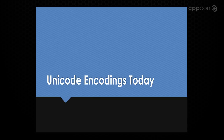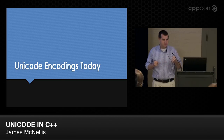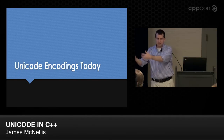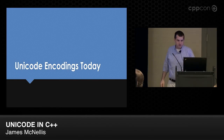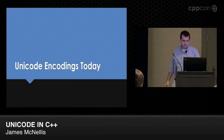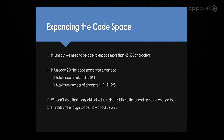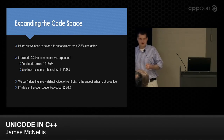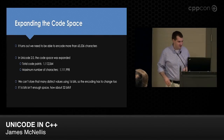Because of this problem, Unicode today is not what it was in Unicode 1.0. A fixed-width 16-bit encoding wasn't good enough. In Unicode 2.0 the code space was expanded to 1.1 million characters — 21 bits. We'll see why that particular limit exists in a bit. If 16 bits isn't enough, the next efficient storage width is 32 bits.